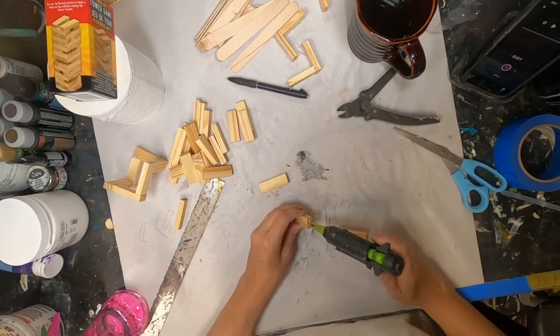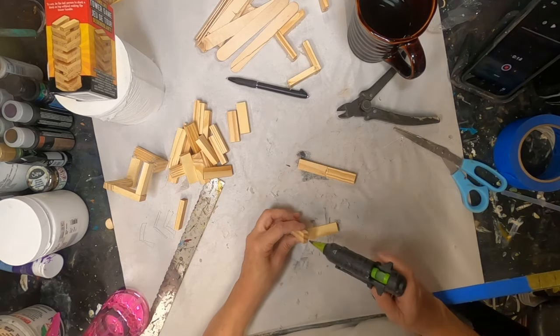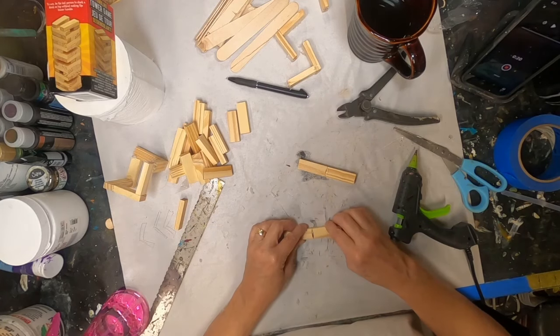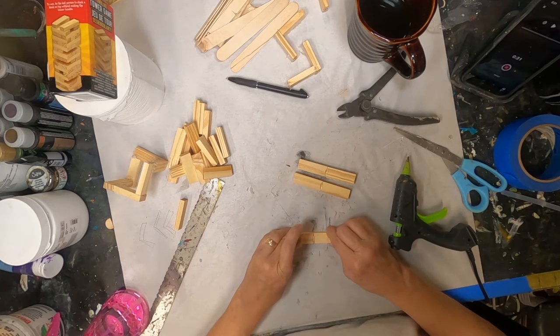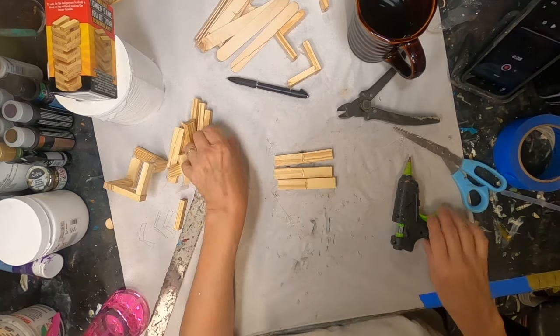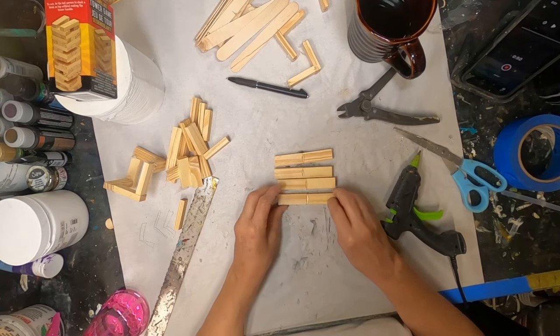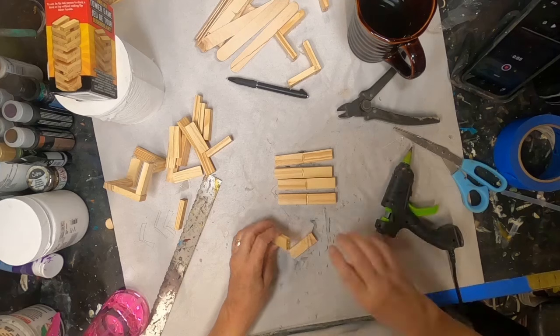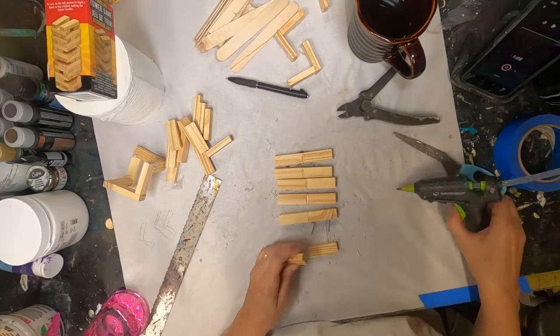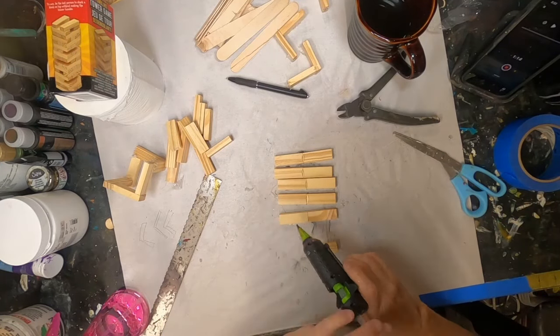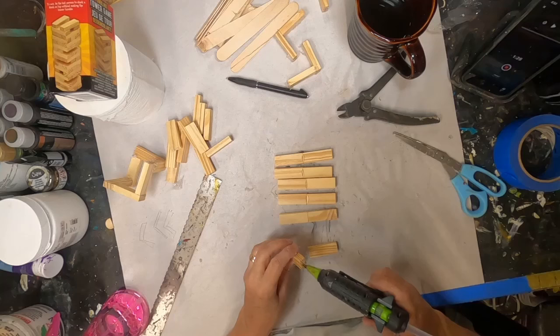Once I get that Mod Podge hard coat on, I will put it off to the side to dry. What you see in the upper left-hand side of my screen right now is the Dollar Tree or Dollar Store little box of Jenga wood pieces. I've pulled those out and I am gluing two of them together end by end until I have a set of six.